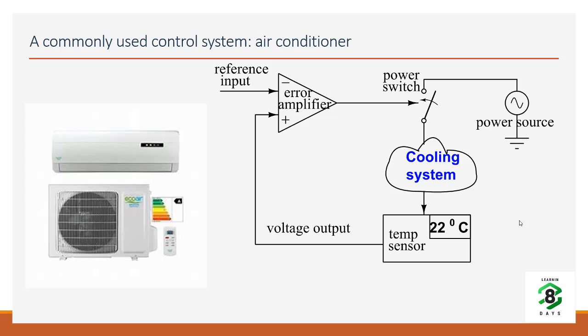That reference voltage gets compared with the temperature sensor's output, and the error amplifier amplifies that small error and makes a decision whether the cooling system should be on or off.